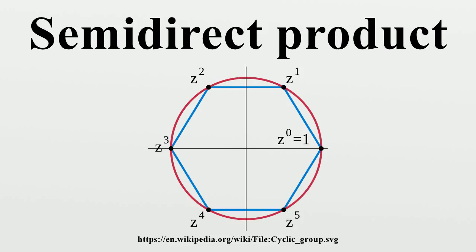As a set, it is the Cartesian product N times H. Multiplication of elements is determined by the homomorphism.